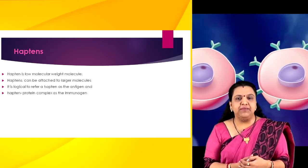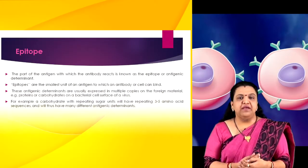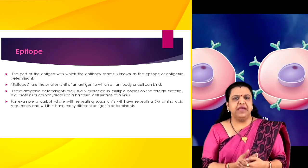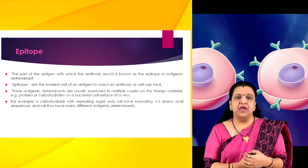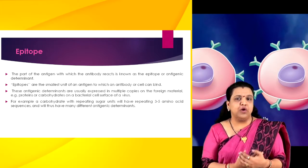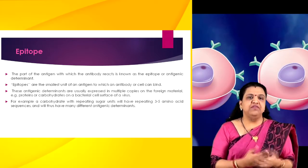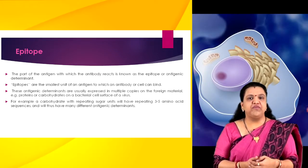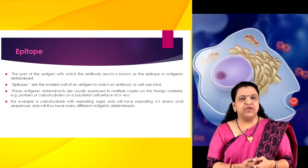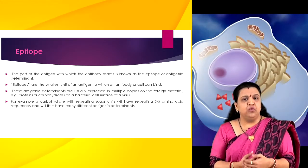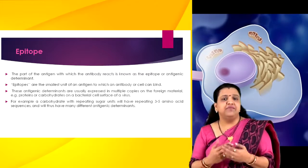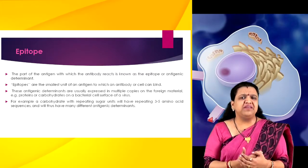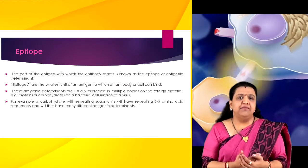It is logical to refer to a hapten as an antigen and a hapten-protein complex as the immunogen, although strictly the word antigen is derived from antibody-generating substances. The part of an antigen with which the antibody reacts is known as the epitope or antigenic determinant. Antigenic determinants or epitopes are the smallest unit of an antigen to which an antibody or cell can bind. These antigen determinants are usually expressed in multiple copies on the foreign material, for example proteins or carbohydrates on the bacterial cell surface or a virus.